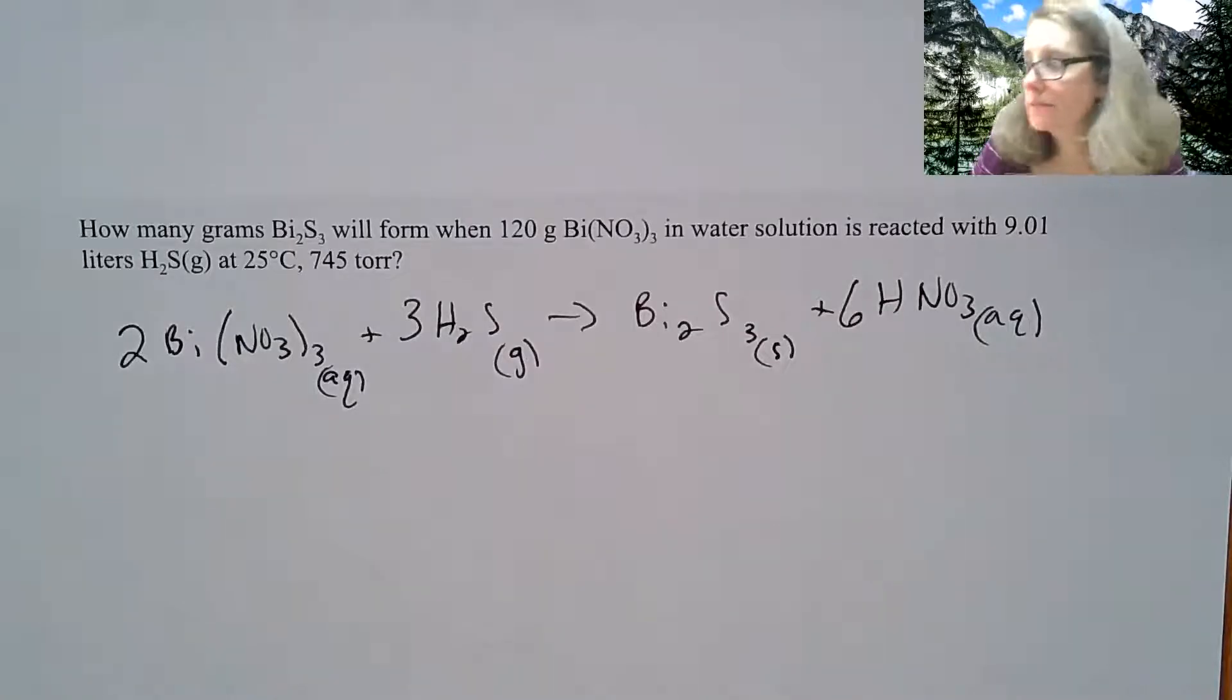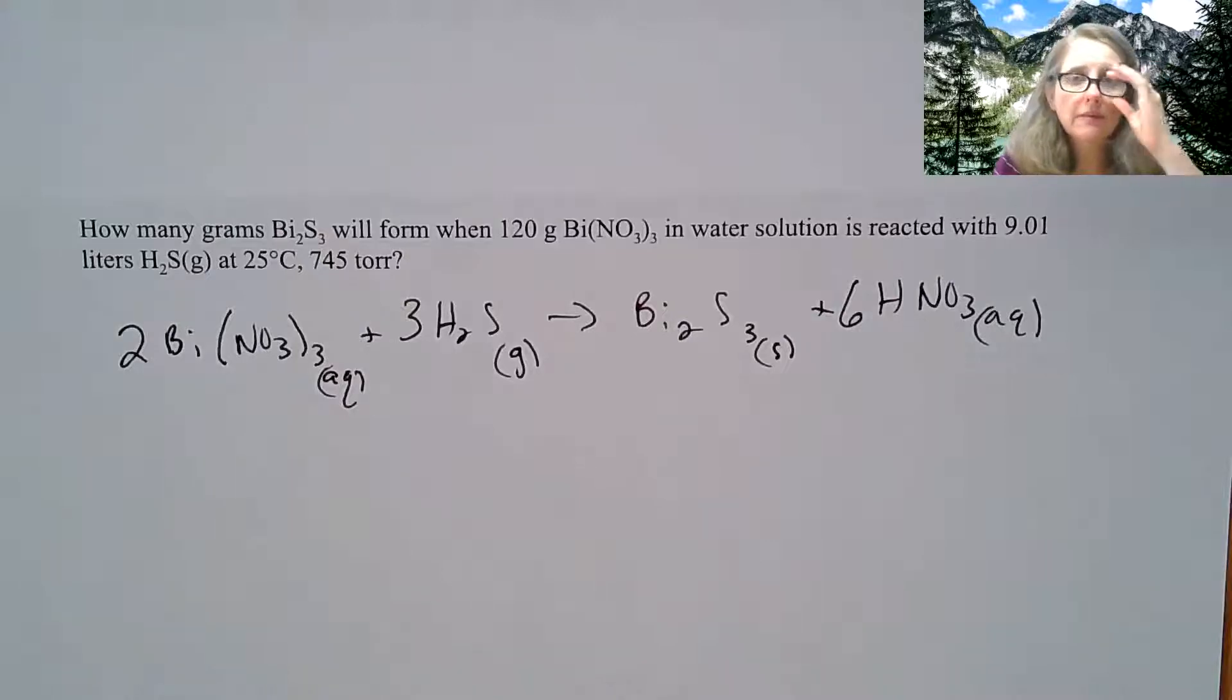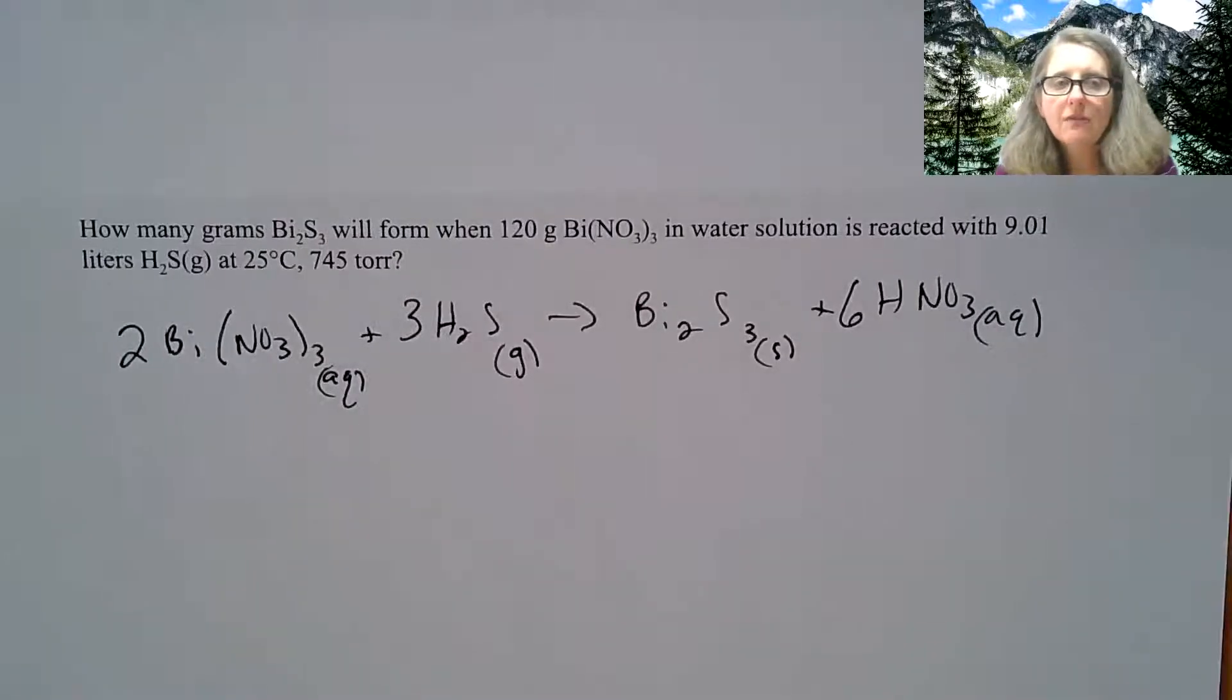Continuing chapter 10 notes, I'm going to work through a few problems here and show you some different ways of approaching them. This one is going to be pretty much a strictly stoichiometry type problem. How many grams of Bi2S3 will form when 120 grams of bismuth(III) nitrate in water solution is reacted with 9.01 liters of H2S gas at 25 degrees Celsius and 745 torr?